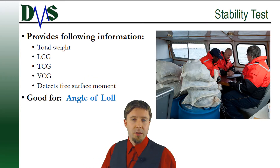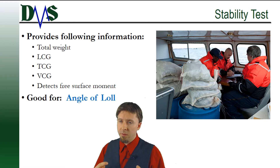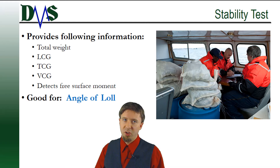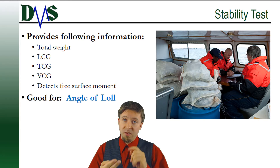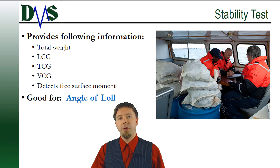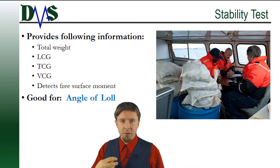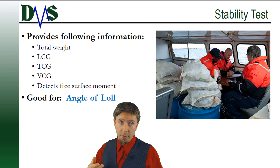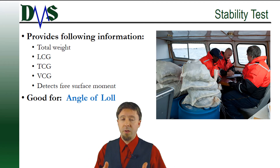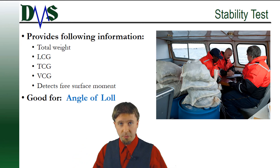The other more advanced test a naval architect can do is a full stability test, which is ideal for detecting an angle of loll. This provides several more details: total weight, exact center of gravity in longitudinal, transverse, and vertical directions. Most importantly, it's going to detect if you have a free surface moment. If there's some tank or cross-connect open that you don't know about, that will show up in the stability test as a free surface moment — and they'll be able to tell you right there on the day whether you have some unknown free surface moment, which is one of the leading causes of an angle of loll.